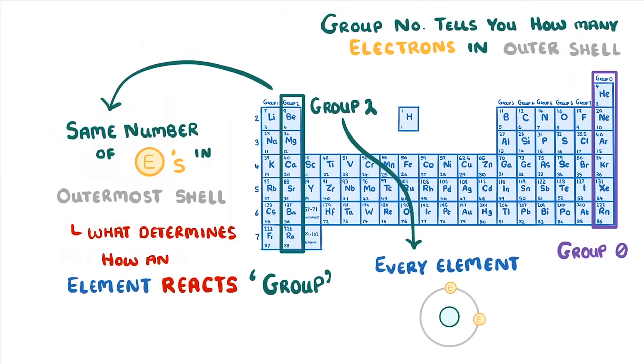Just make sure you don't get confused here. All the elements in a given group have different total numbers of electrons, they just have the same number of electrons in their outermost shell.